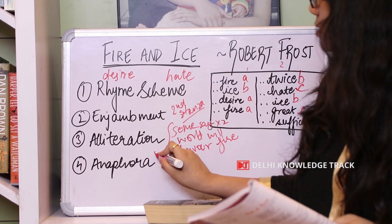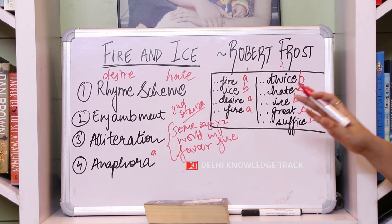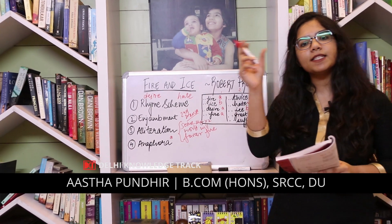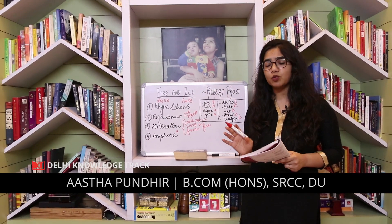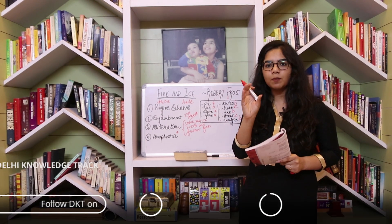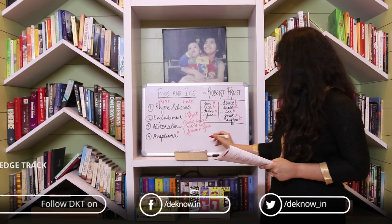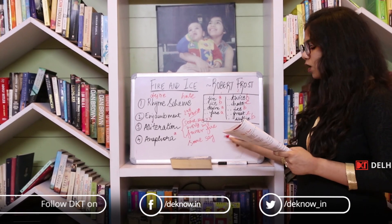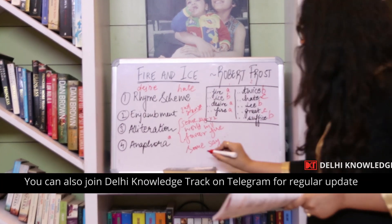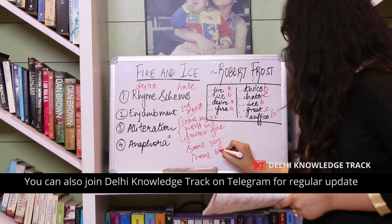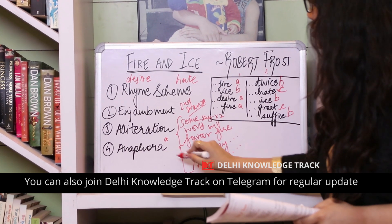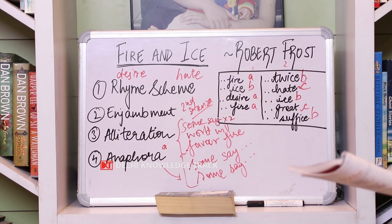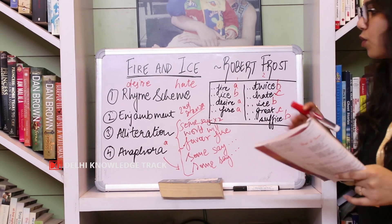Another literary device is anaphora — this is a new one. Anaphora is when a repeated expression or phrase appears at the beginning of sentences. In this poem, the first line says 'Some say the world will end in fire,' and the second line says 'Some say in ice.' Both lines begin with 'some say' — that is an example of anaphora. These kinds of literary devices can be asked in your exam.